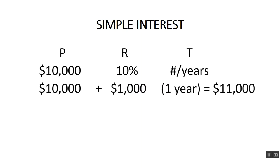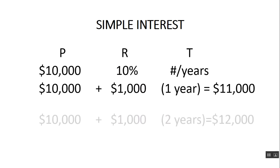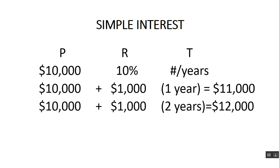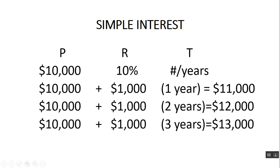For example, after one year, if you had $10,000 and it earns 10%, you'd earn $1,000 and you'd have $11,000. Then the following year you'd have $12,000. The following year you'd have $13,000, because the money is not being reinvested. The interest you earn — whether you're withdrawing it or whatever you're doing with it — it's not being compounded.